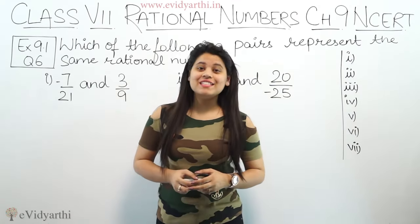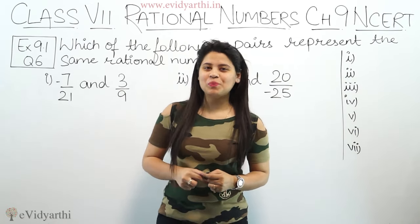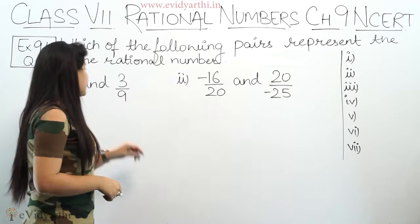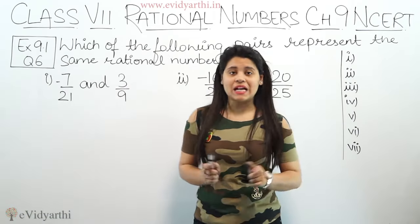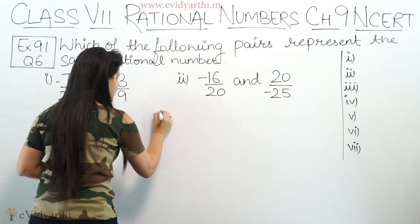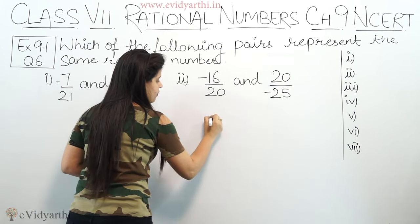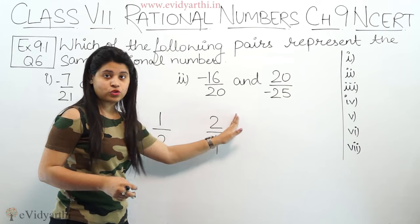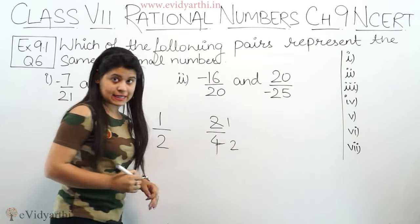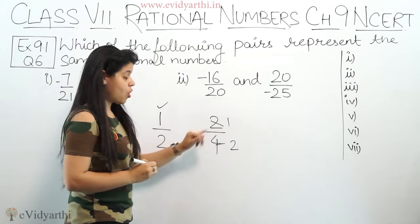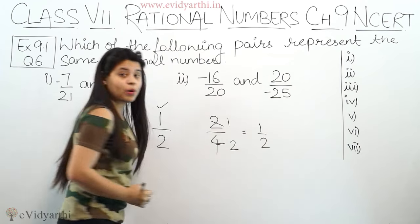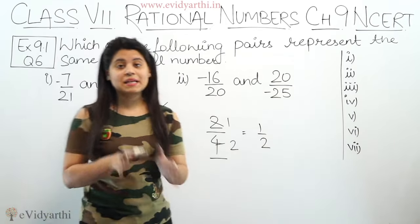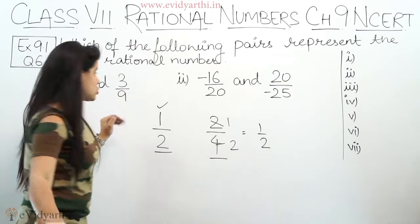Hello everyone, this is Manzi from Evidyarthi Church coming to question number 6, exercise 9.1. In this question we have which of the following pairs represent the same rational numbers. You have a pair given, so which of these two rational numbers are the same. It means that if I write 1 upon 2 and 2 upon 4, are they equal or same? We can convert 2 upon 4 to the lowest term, which becomes 1 upon 2. So these are the same rational numbers. Now let's begin.